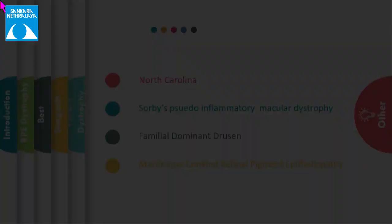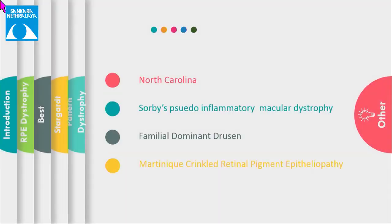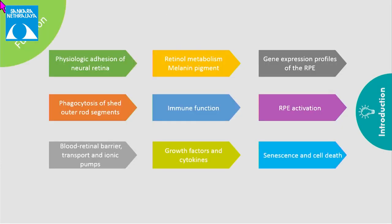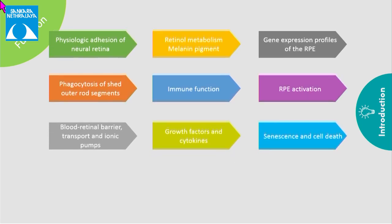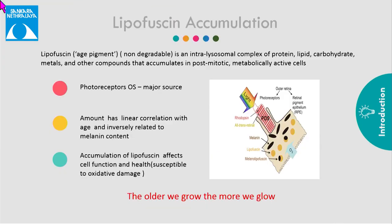RPE is a monolayer of pigmented epithelium cells located between the neural retina and the vascular choroid. It generally remains stationary and does not proliferate. It performs vital functions like phagocytosis, secretion, maintenance of blood-retinal barrier, and helps in transportation.